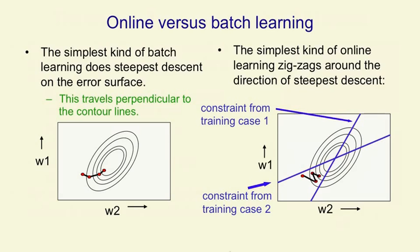So in the picture on the right, there are two training cases. To get the first training case correct, we must lie on one of those blue lines. And to get the second training case correct, the two weights must lie on the other blue line. So if we start at one of those red points and we compute the gradient on the first training case, the delta rule will move us perpendicularly towards that line.